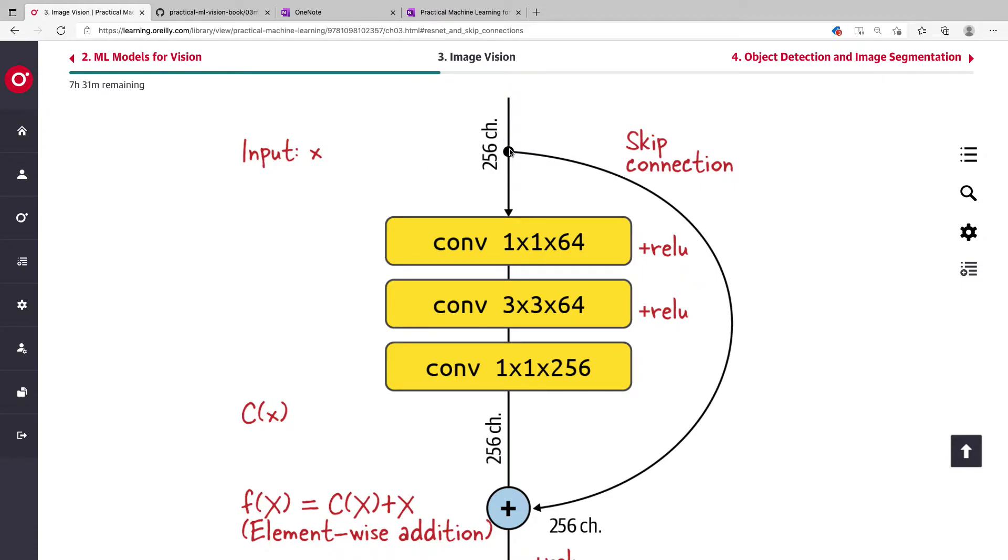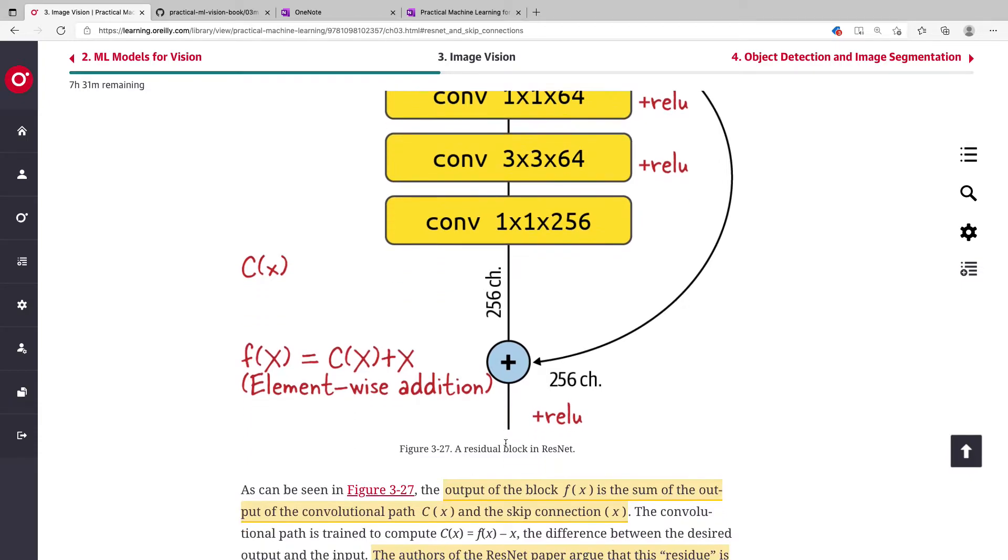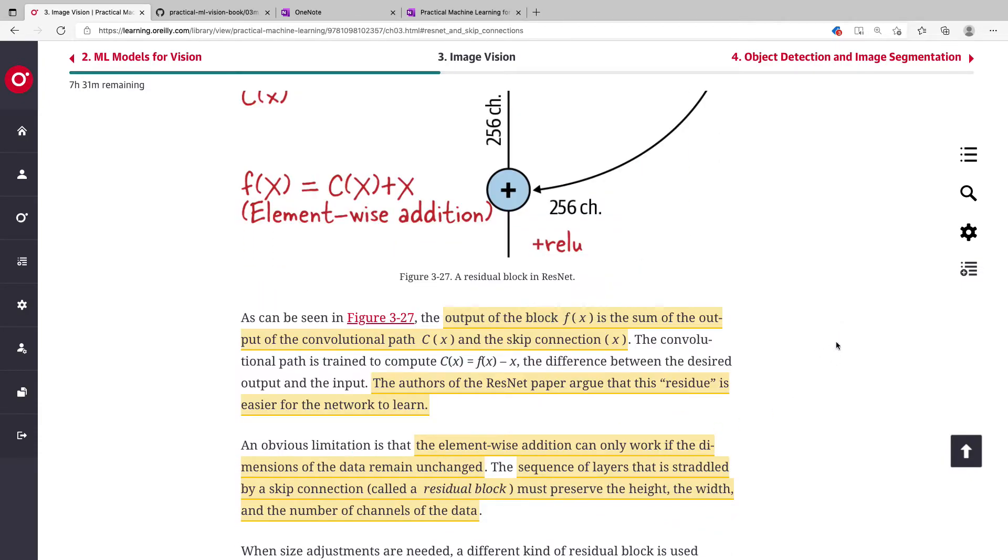If this is the input x, this module is taking the x and producing C of x. You're literally passing the x unaltered to this place and adding it to get this f of x at the end of this operation.